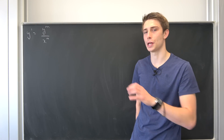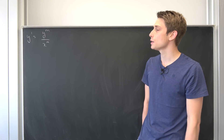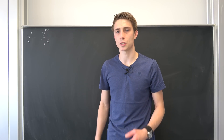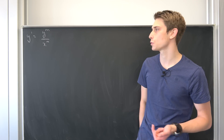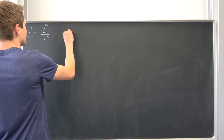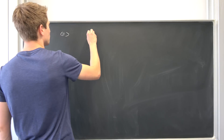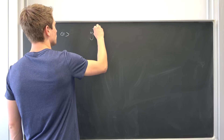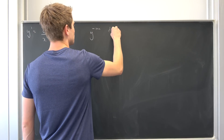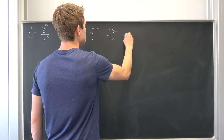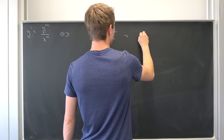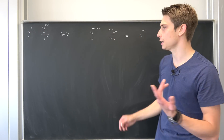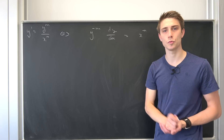First, I would like to divide both sides by y to the nth power, which must not equal zero. So we end up with y to the negative nth power times dy/dx being equal to x to the negative nth power. Solving this is really quite easy.